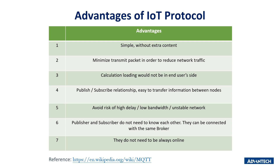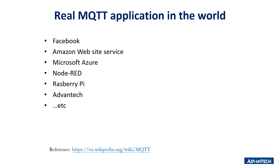The advantages of IoT protocols are that data size should be as small and precise as possible — messages do not contain useless data. Easy to send, easy to get. There are many popular web services that implement MQTT protocol, such as Facebook, Amazon, Microsoft, Node-RED, Raspberry Pi, and Advantech.